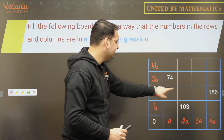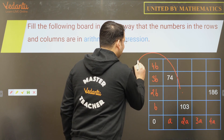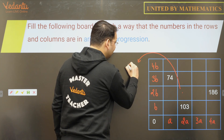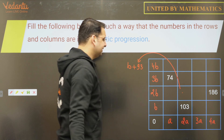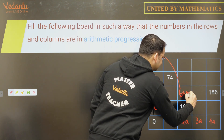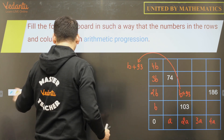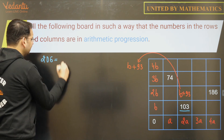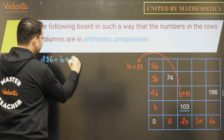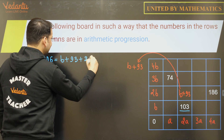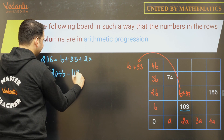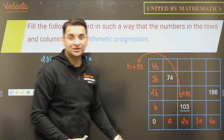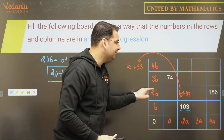We know that 2b and 186 are in the same row/column, so this particular box will be the arithmetic mean of 2b and 186, giving the value b + 93. Since these three terms are in AP, twice the middle term equals the first plus the third. This gives us our first equation: 2a + b = 113.